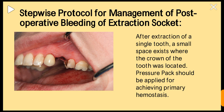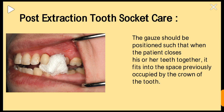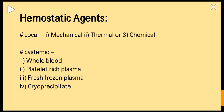After extraction of a single tooth, a pressure pack is applied for achieving primary hemostasis. It should be noted that the gauze should not simply be laid on the occlusal table — the pressure must be applied directly to the bleeding socket. The gauze should be positioned so that when the patient closes teeth together, it fills into the space previously occupied by the tooth.